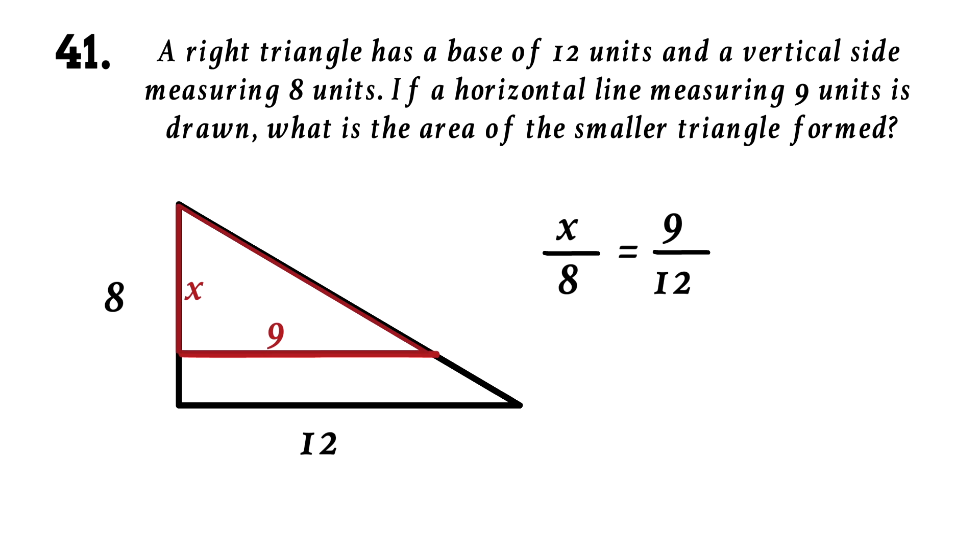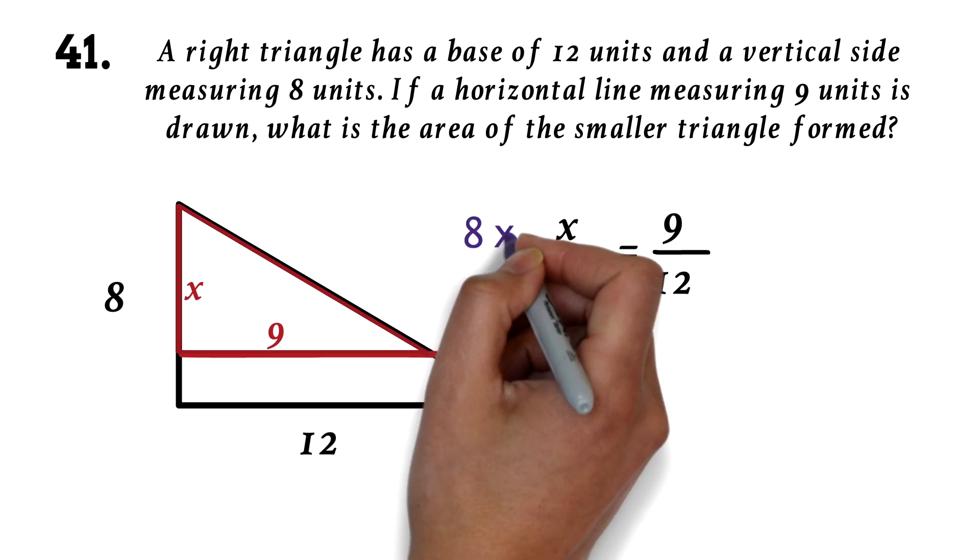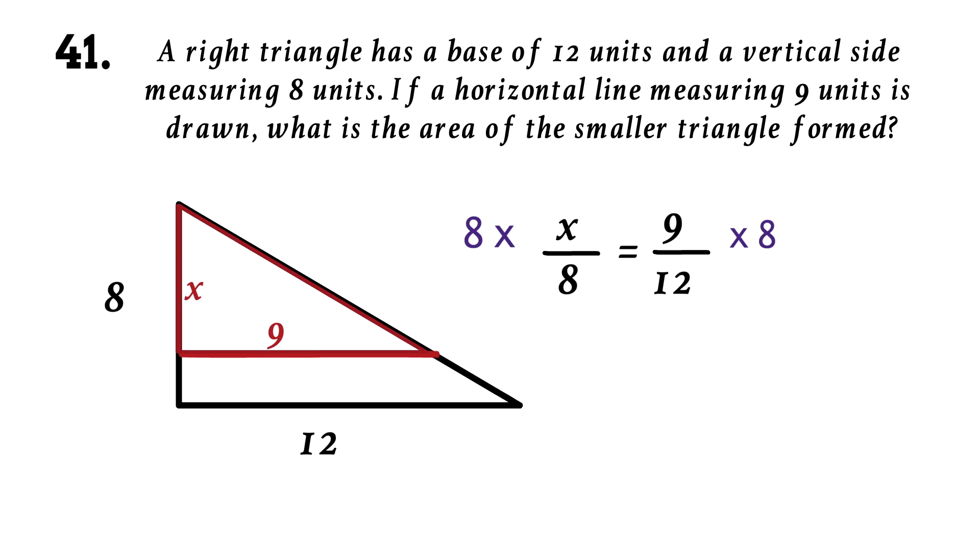Now, we solve for x. Multiply both sides by 8. This 8 will cancel out. 9 divided by 12 times 8 is 6. So we have the height of the smaller triangle being 6 units.